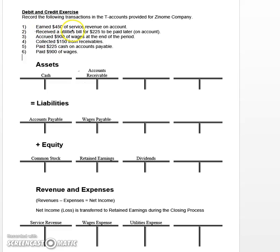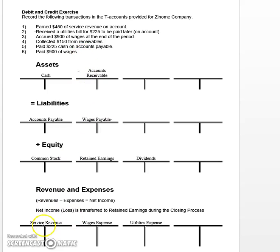Number one says that we earned $450 of service revenue on account. The first thing you want to ask yourself is, was there any cash involved in this transaction? The key words to see here are 'on account,' so no cash involved in this particular transaction, at least not yet. But it did look like we earned service revenue. So in this case, we can start by recording an increase to our service revenue account. Revenue accounts increase on the credit right side, so we're going to reflect that on the credit right side here with an increase of $450.